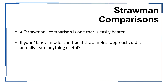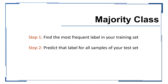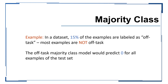There are some simple models we can use in comparing our model's performance. A majority class model is considered the simplest modeling approach and uses just two steps. First, we use the training set to identify the most frequent label. Then, we predict that label for all samples of the test set. For example, if we had a dataset where 15% of the samples were labeled as off-task — where most samples are not off-task — our majority class model would simply predict zero for all examples of the test set.